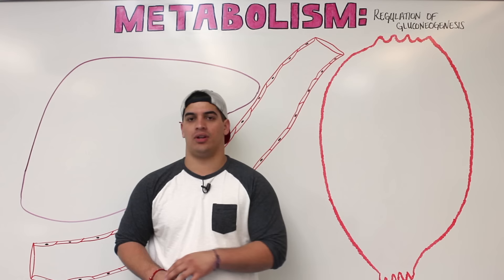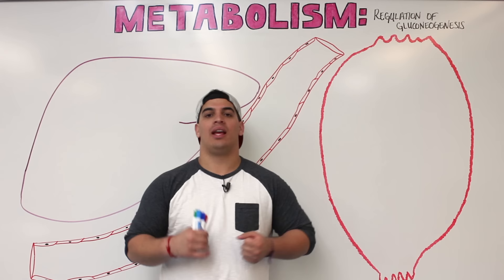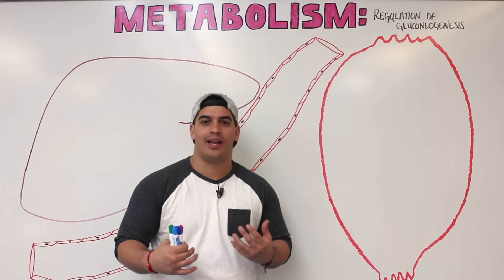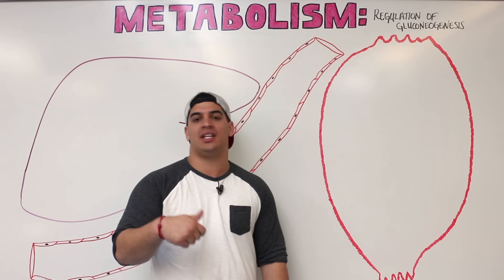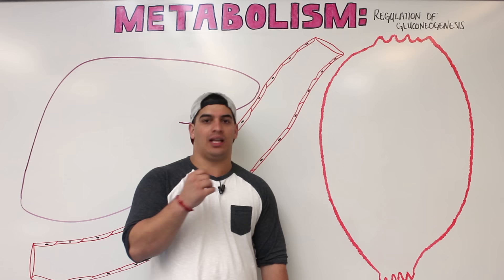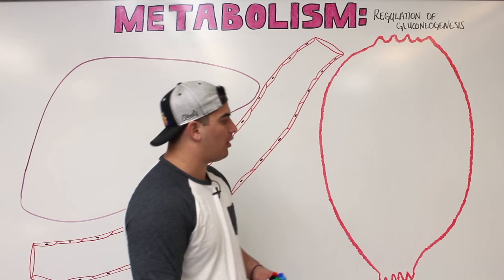In this video we're going to specifically talk about the regulation of gluconeogenesis. We've already talked about gluconeogenesis and the pathway involved, and now we're going to talk about the glucose-alanine cycle and the Cori cycle, how they link the muscles to the liver. After that, we'll discuss the enzymes PEPCK, pyruvate carboxylase, and fructose-1,6-bisphosphatase and what's regulating them.